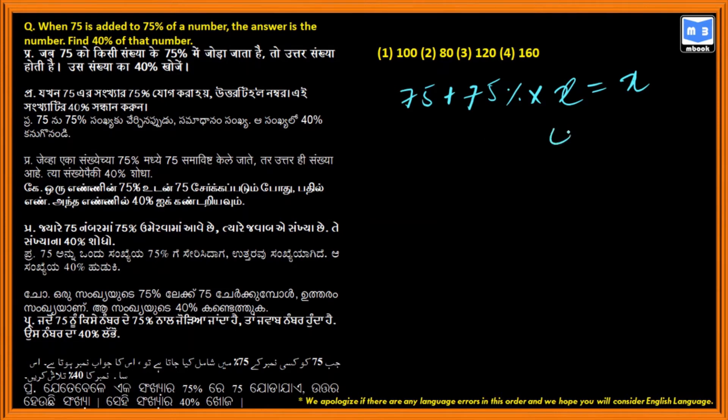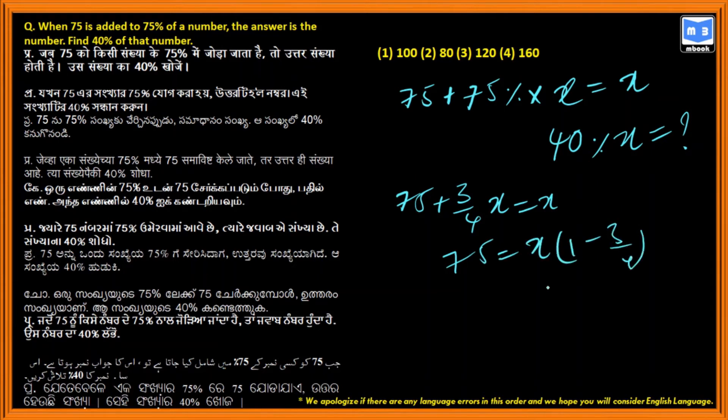Find the 40 percentage of X equals, so 75 is added to 3 by 4. 75 percentage is written as 3 by 4 of X equals X. 75 equals X times 1 minus 3 by 4. 75 equals X times 1 by 4, and X equals 300. The 40 percentage of X.